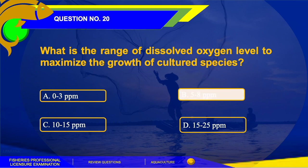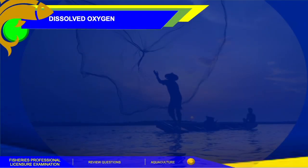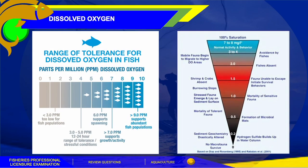The answer for this question is letter B, 5–8 ppm. Dissolved oxygen (DO) is a gas of great importance in fish culture and is a highly critical water quality parameter. We should know the range of tolerance for dissolved oxygen of our culture stock. A DO reading of less than 3 ppm is too low for fish populations; 3–5 ppm is a stressful range; 6 ppm supports spawning; greater than 7 ppm supports growth and activity; and 9 ppm or greater supports abundant fish populations.